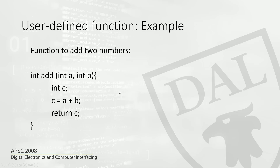Here is an example of a user-defined function. I want to write a function that adds two numbers. int is the return type. add is the function name — it can be anything, but make sure it doesn't start with a number; it has to start with a letter. The arguments are int A and int B. Inside, I declare another variable C, assign it the sum C equals A plus B using the assignment operator, and then return C, which returns the sum. This is a user-defined function.